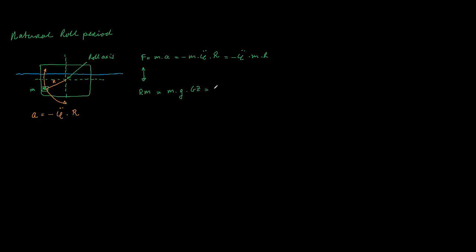The righting moment will be something like the mass times the gravity times GZ. You can write it the other way: we say that's the mass times the gravity times GM sine roll angle, which would be more or less mg GM times the rolling angle for small angles.